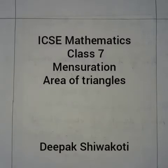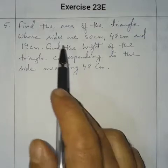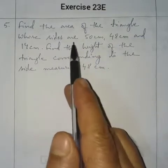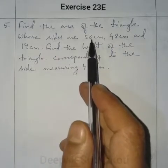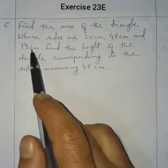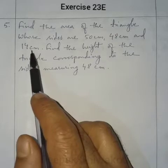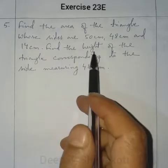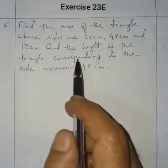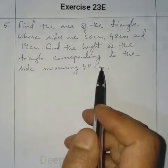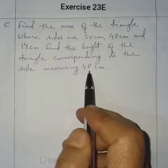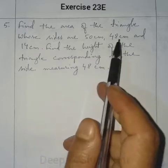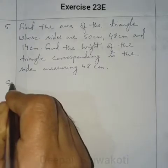Welcome to Class 7 Mathematics. We are in Chapter Mensuration, Question Number 5: Find the area of the triangle whose sides are 50 centimeter, 48 centimeter, and 14 centimeter. We also have to find the height of the triangle corresponding to the side measuring 48 centimeter, meaning the base is 48 centimeter. So first we have to find the area.